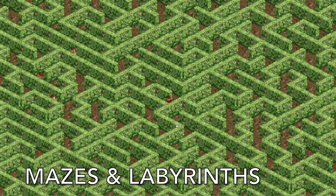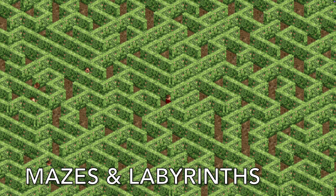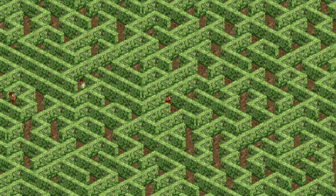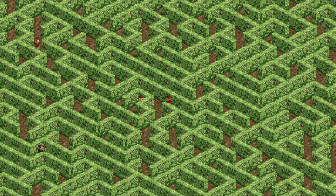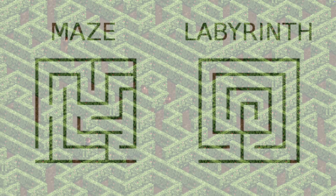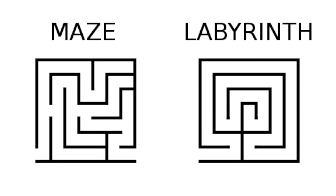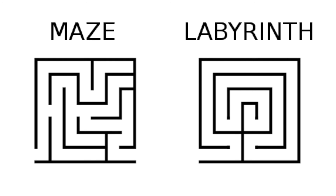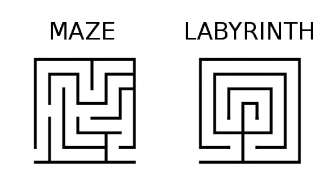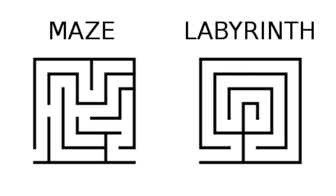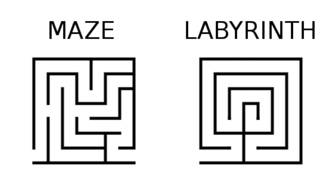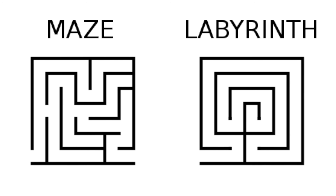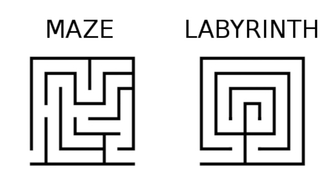For those that aren't familiar, the difference between a maze and a labyrinth is that a maze is a collection of branching paths that must be solved to reach the exit. The path can branch off in different directions, there can be dead ends, it can reconnect with itself, but it's sort of like a puzzle where the guests have to solve it in order to get out of the maze.